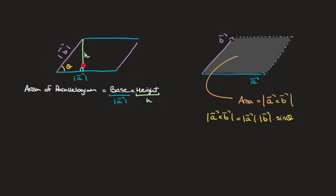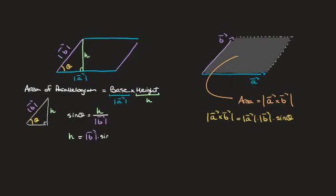What we need to find is the value of the height h. Since h is perpendicular to the base, we can use right-angle trigonometry. Considering the right-angle triangle here, relative to the interior angle theta, the height h is the opposite side length and the hypotenuse is the magnitude of vector b. Using sine of theta, we get sine of theta equals h over the magnitude of vector b. Rearranging, the height h equals the magnitude of b times sine of theta.